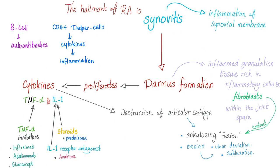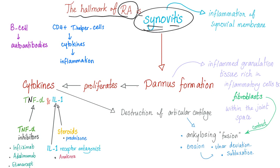The hallmark of rheumatoid arthritis is synovitis — inflammation of the synovial membrane — so it affects synovial joints, not fibrocartilaginous or fibrous joints. Synovitis leads to pannus formation. The pannus is granulation tissue rich in inflammatory cells and fibroblasts. Fibroblasts cause fibrosis; fibrosis contracts, leading to ankylosis — fusion of the joint.